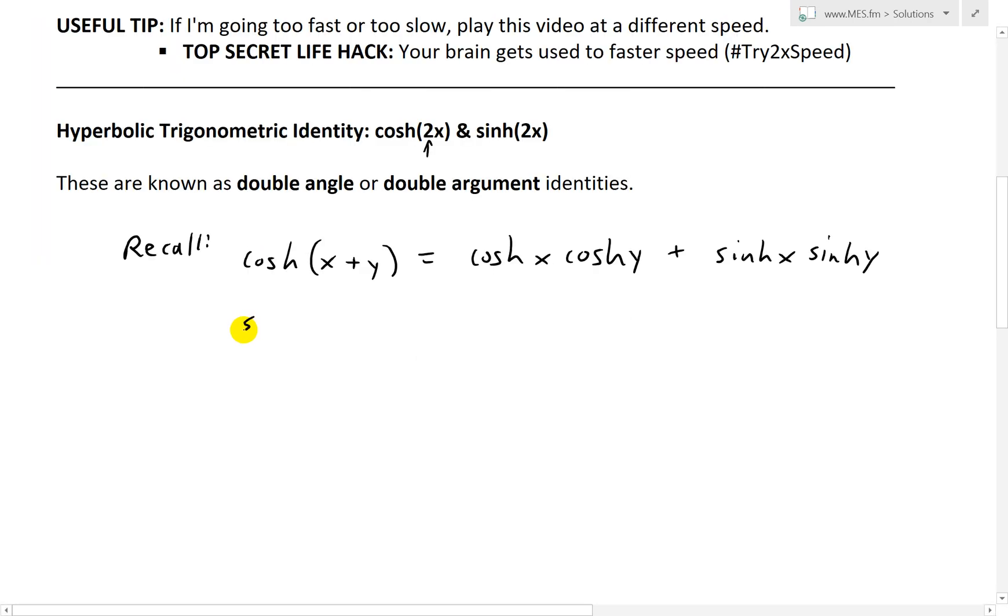And likewise for the sinh one, but anyways, likewise for the sinh, we have sinh x plus y. This one equals to sinh x cosh y. So we call this one plus now we have cosh x sinh y.